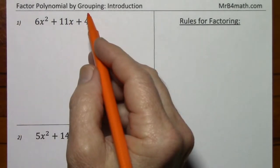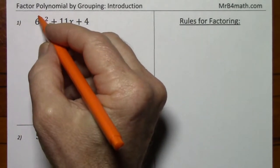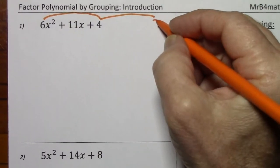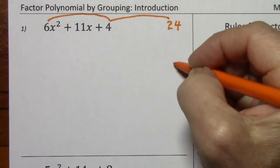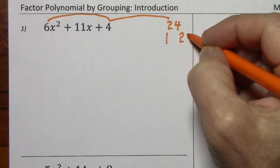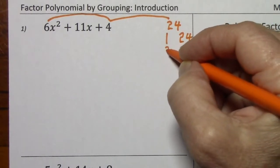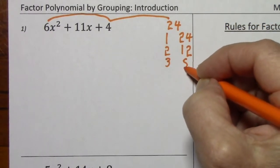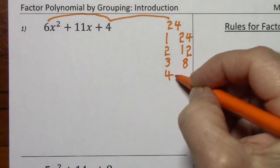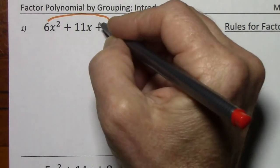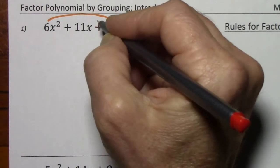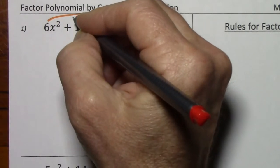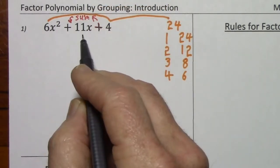So when you use factor by grouping, you multiply first times last and list all the factor pairs. Then, noting the sign of the last term — since it's positive — you're looking for a sum of positive 11.